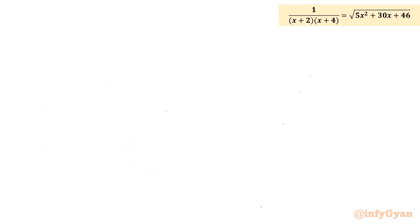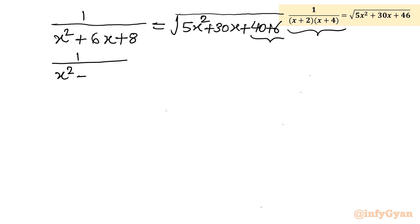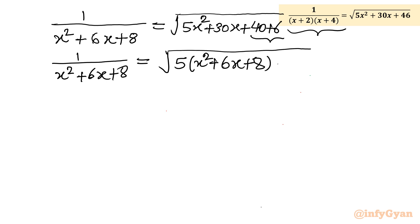Now let us solve the equation. Expanding the LHS: x² + 6x + 8. For the RHS, I split 46 into 40 and 6, writing it as √(5(x²+6x+8) + 6). This makes the substitution obvious: let t = x² + 6x + 8. So the equation becomes 1/t = √(5t + 6).